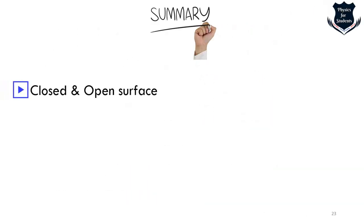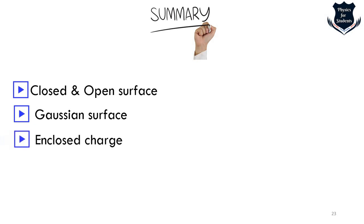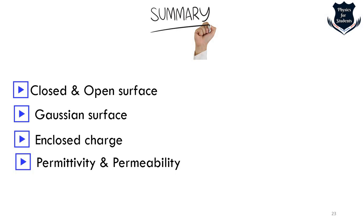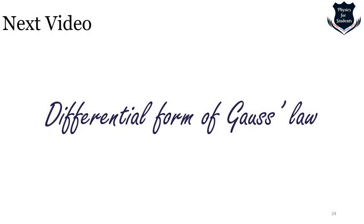To summarize: we have learned about closed and open surfaces, what is a Gaussian surface and its properties, what is an enclosed charge, and what is permittivity and permeability. In the next video, we are going to cover the differential form of Gauss's law. Please let me know how you like the video, leave comments on any section you want me to improve or explain more. Please like, subscribe, and stay safe and happy. Goodbye.